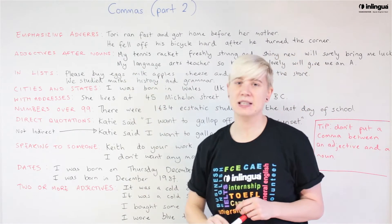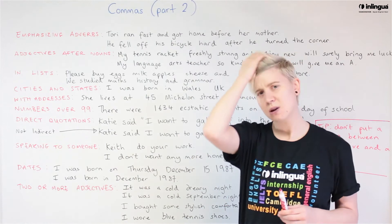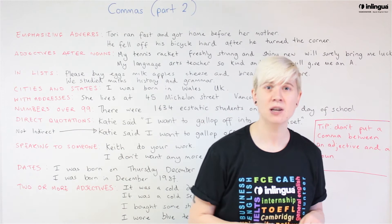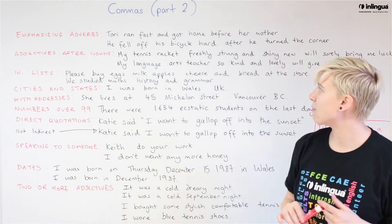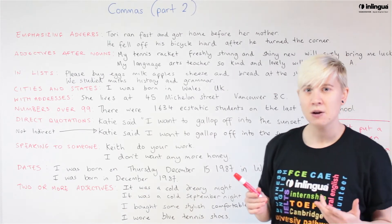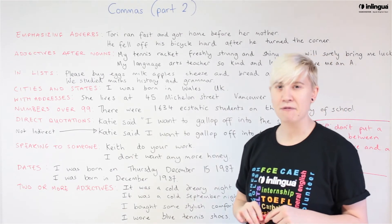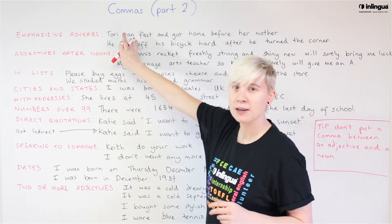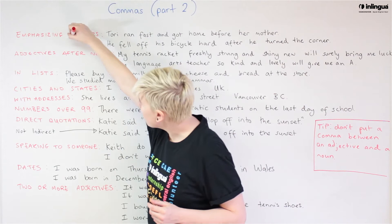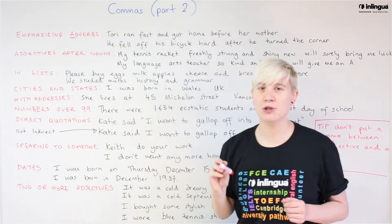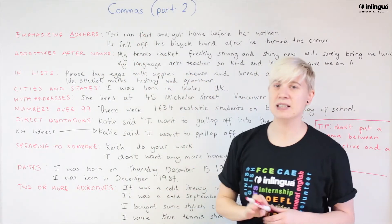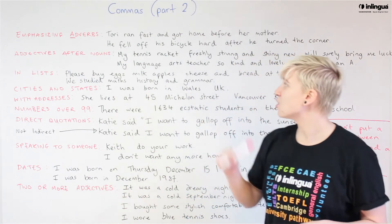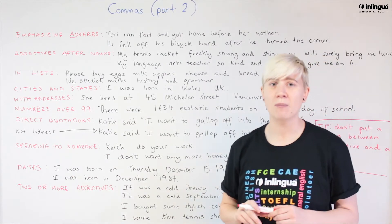Let's start by looking at emphasizing adverbs. An adverb is a word that describes how something happens. My first sentence: 'Tori ran fast and got home before her mother.' Let's find the verb — the action word — which is 'ran.' The adverb adds information to the verb. The adverb here is 'fast,' and this sentence is perfectly fine grammatically: 'Tori ran fast and got home before her mother.' No problem.